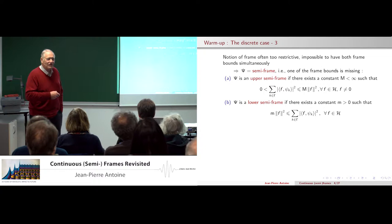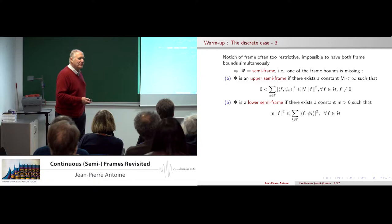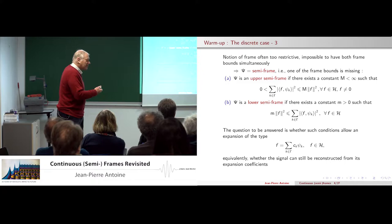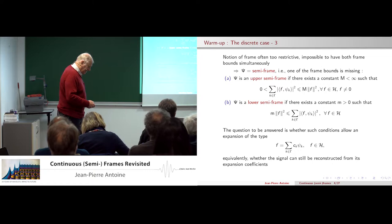The problem is that you cannot always have two frame bounds at the same time. Sometimes you can have one or the other, but not both. So you need to generalize, and that is why we introduced the object called semi-frames: upper semi-frames if there is an upper bound, lower semi-frame for the lower bound. The question of course is what can you do with that — how far can you go in terms of reconstruction, expansion, and so on?